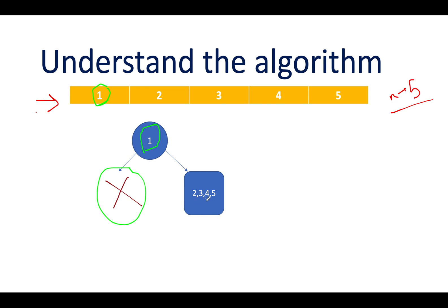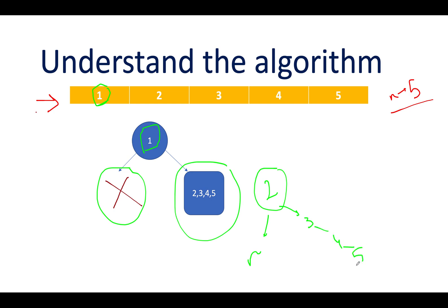Its right child will have 2, 3, 4, and 5 as nodes. So if we already know the roots to all the combinations of trees containing 2, 3, 4, and 5, we can attach those independent trees. Let's assume one possible tree: 2 as a root, then null on the left, then 3, then 4, and then 5. This is one possible combination.